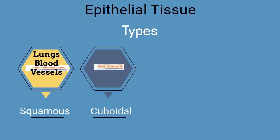Cuboidal tissues have a width and height which is the same, like a cube. Many times you find these in important glands.